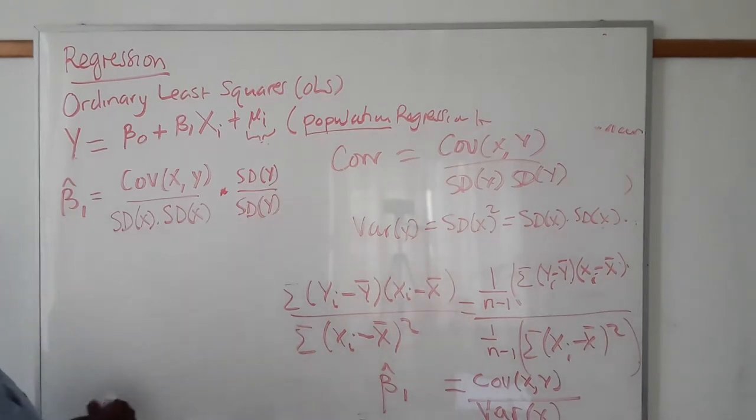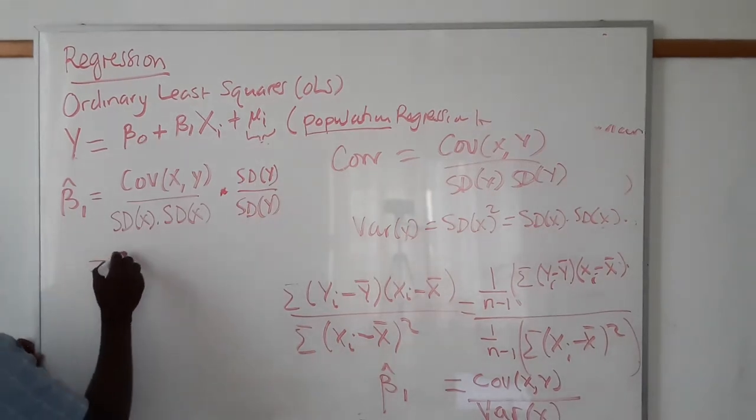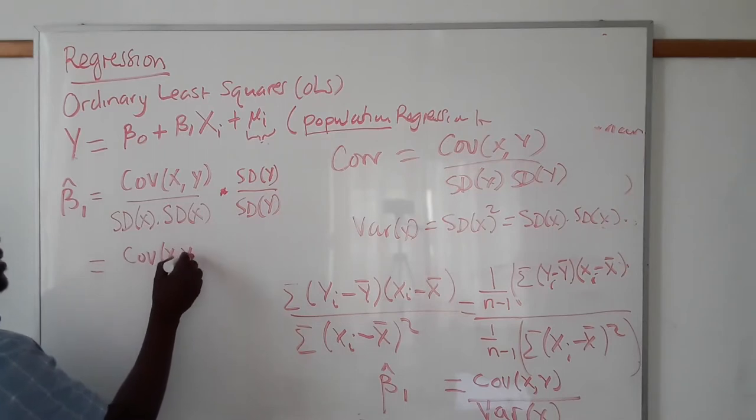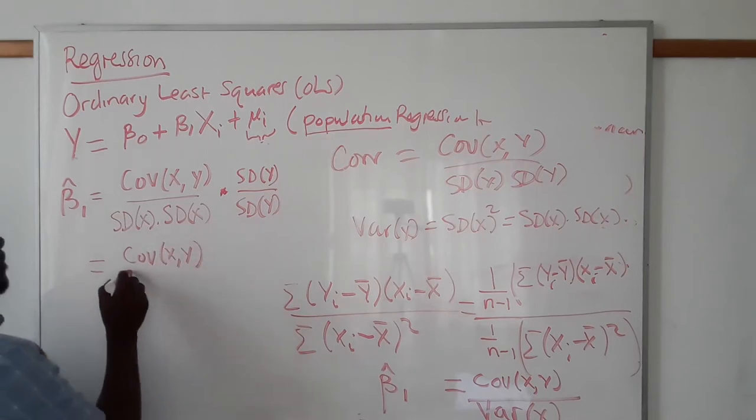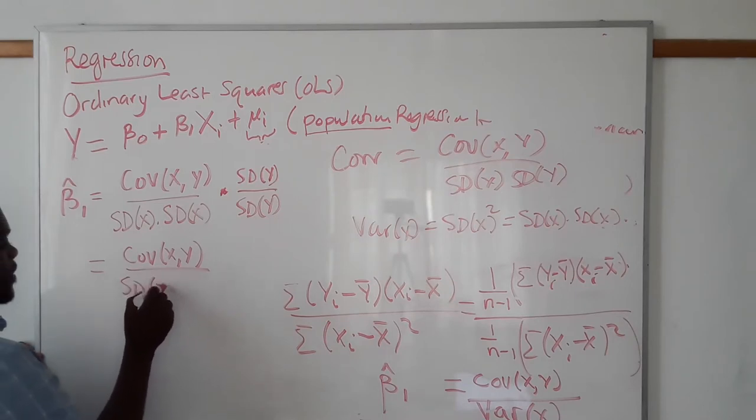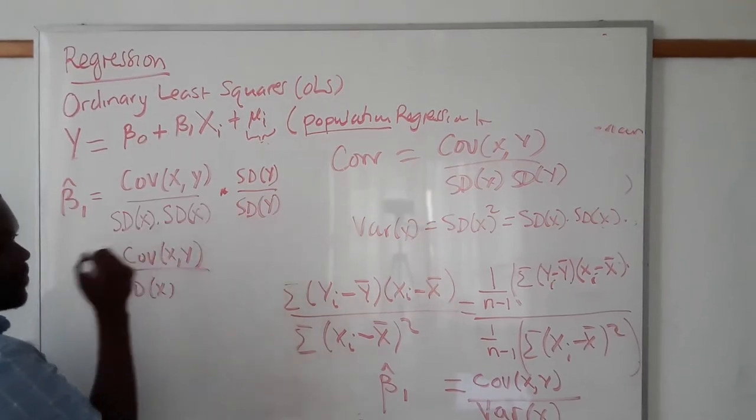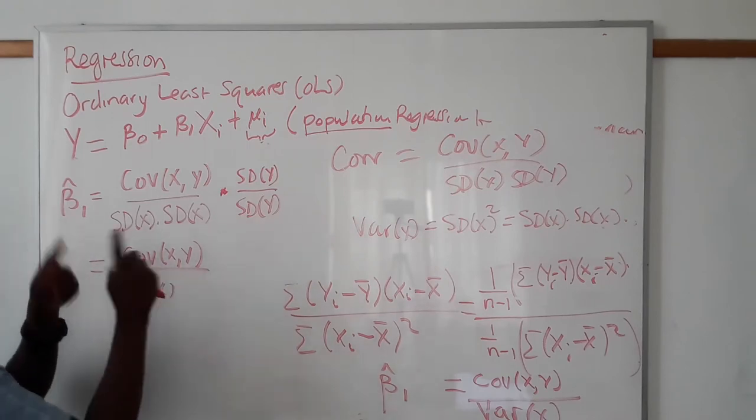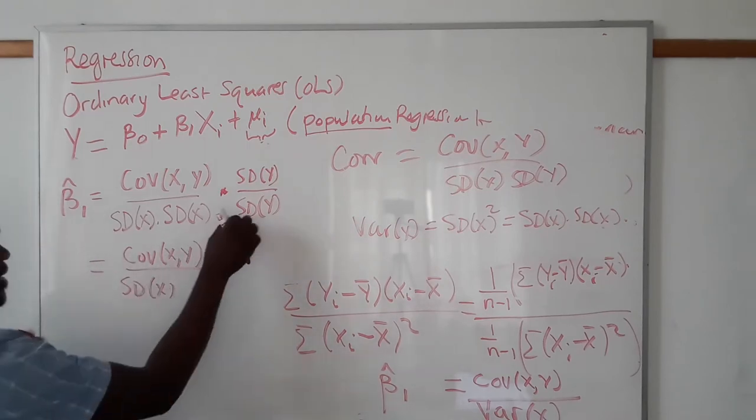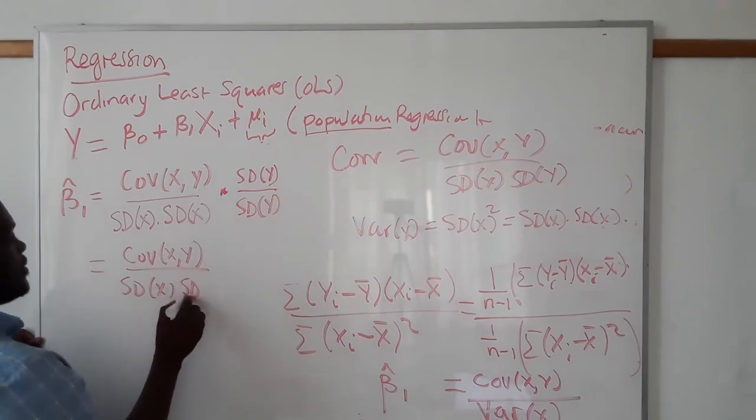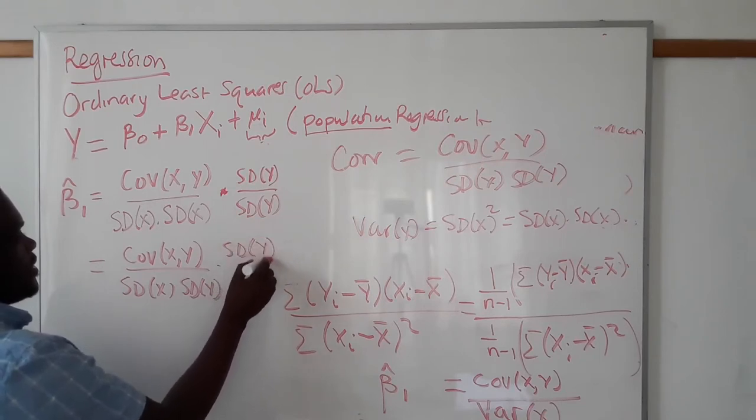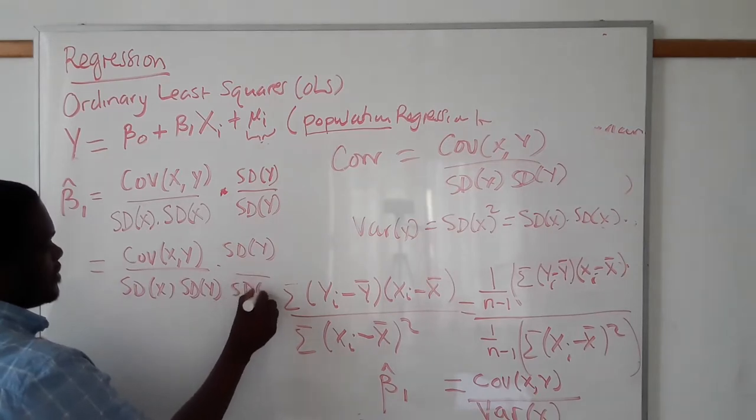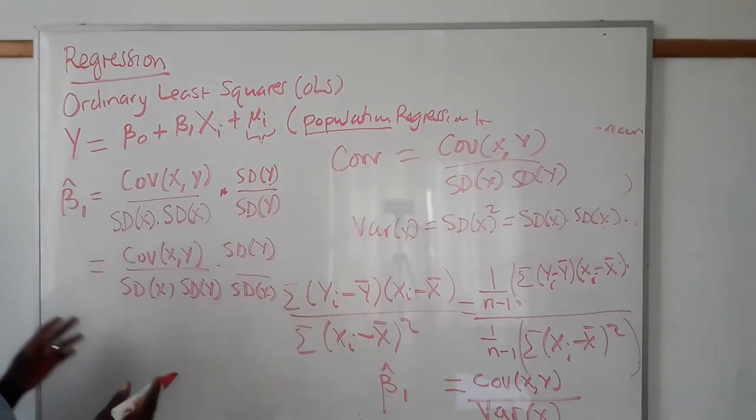We can then manipulate this relationship and it becomes covariance of X, Y over SD(X). Now, because this and that and that are not like each other, I can just rearrange them in terms of how I write. I can start by writing that SD(Y), and I still have my SD(Y) there. So one of the SD(X)'s has to come this side.